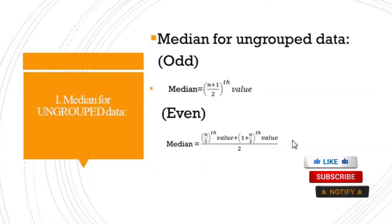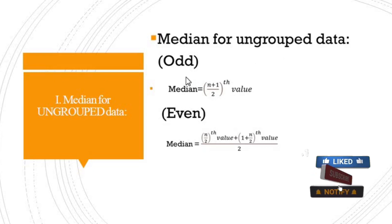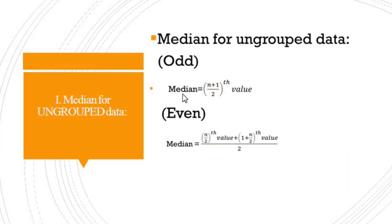For median of ungrouped data when the number of observations is odd, you apply the formula: Median = ((n + 1) / 2)th value, where small n is the number of observations. The second case is when the number of observations is even.